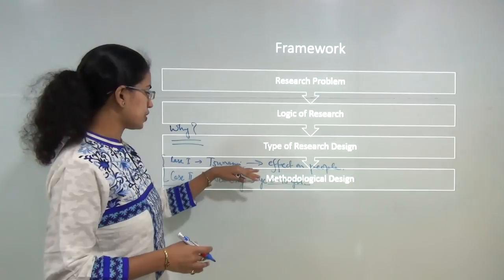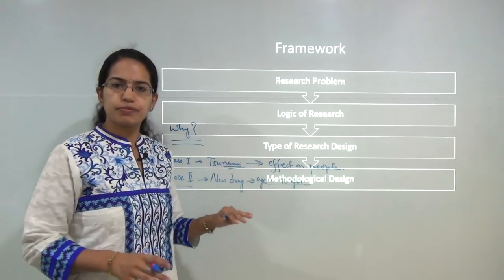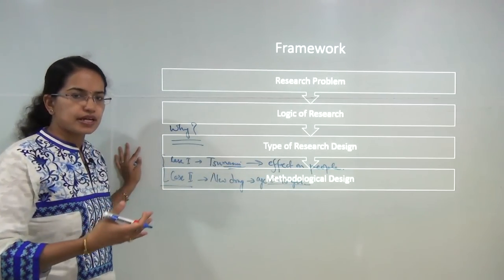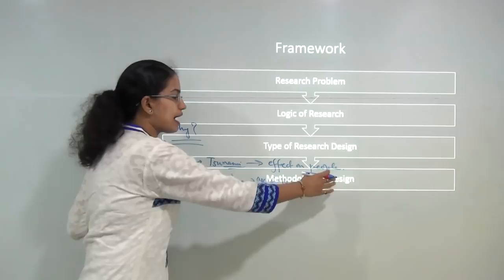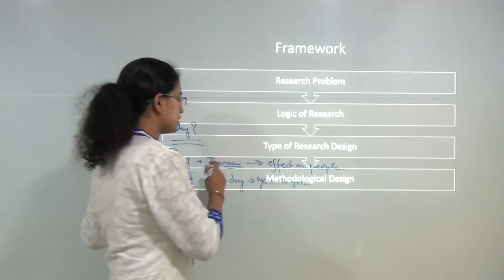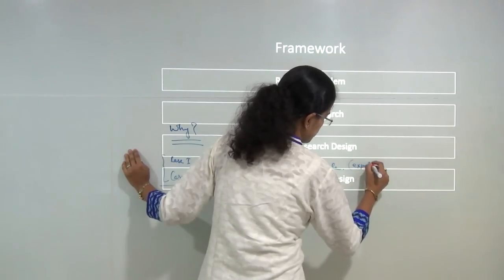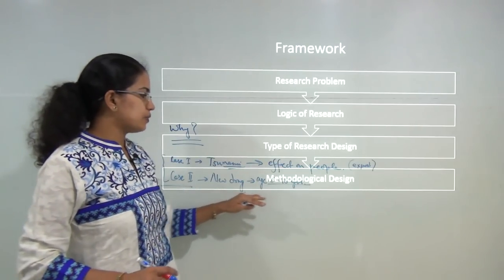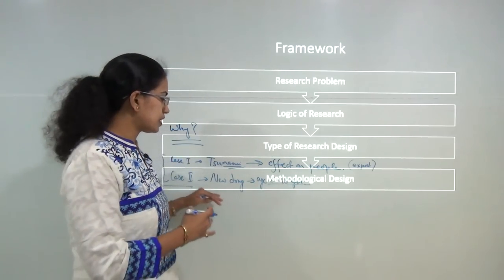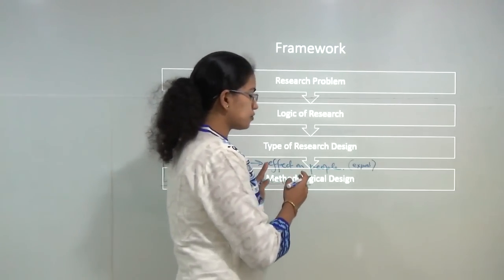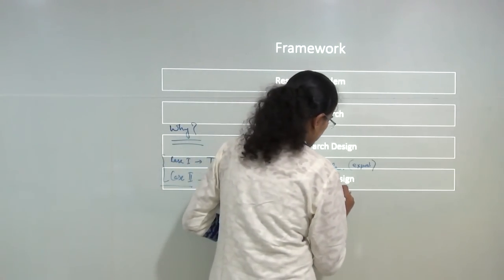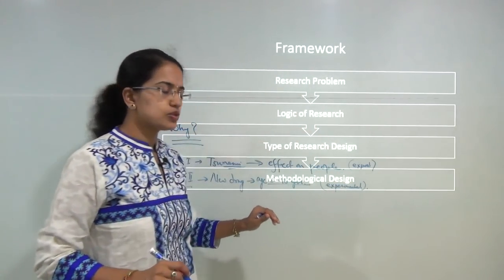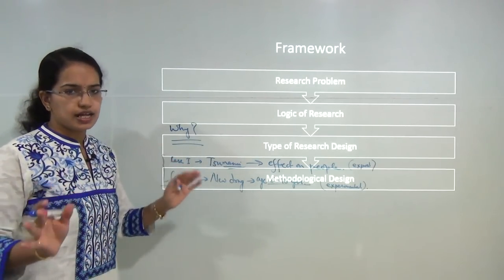The approach that I would use for case 1 and case 2 would be entirely different. In case 1, something has already happened and we are studying the impact after the event is over — we would be using a kind of exposed factor research. In case 2, we are trying to do an experiment of a new drug on an age group of 5 to 15 years, and hence we would be using a kind of experimental design. So the methodology used to study case A and case B is entirely different.